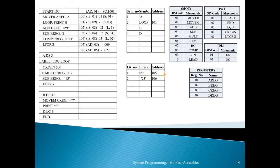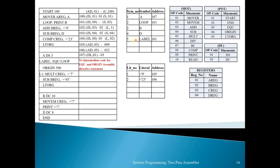The next statement is 'A DS 3' — a declarative storage statement. DS is at position 01 in the declarative table. Intermediate code: (DL, 01) (-) (03), meaning three locations are reserved. The address of symbol A is assigned as 107 (current LC). Next is 'LABEL EQU LOOP' — we check if LABEL is in the symbol table; it is not, so we add it and assign the address of LOOP, which is 101. LABEL is entered at position 5 in the symbol table with address 101.